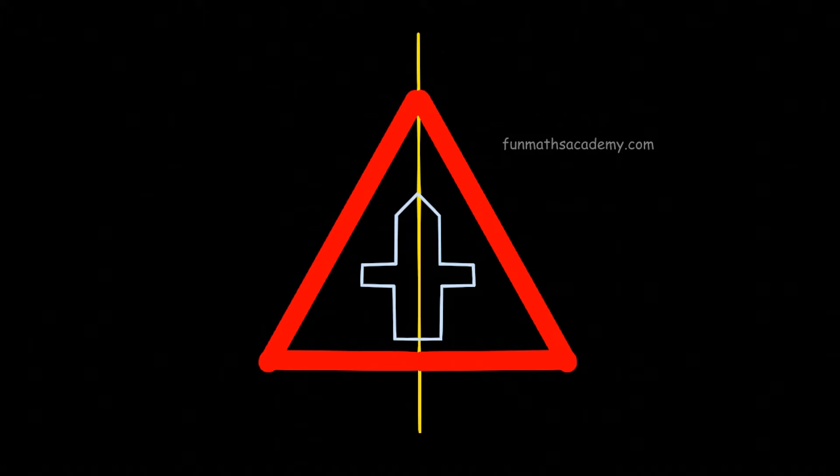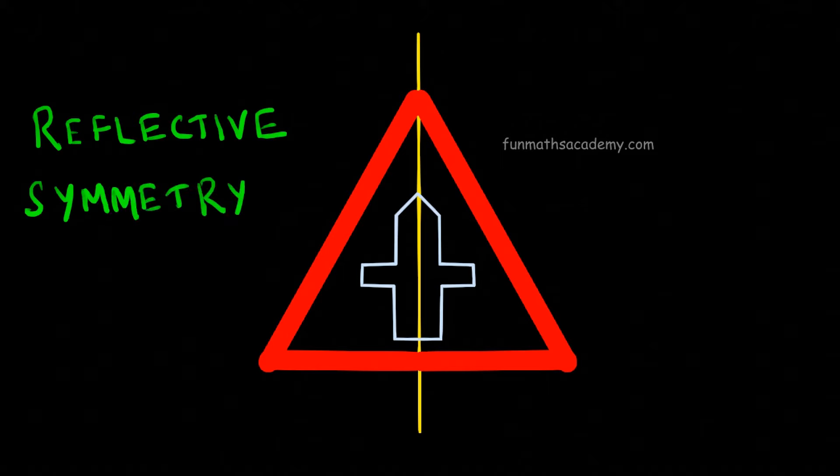In this two-dimensional shape, as one part is the reflection of the other part, you can say this shape has reflective symmetry. The fixed line we use to create this reflective symmetry is called the line of symmetry.